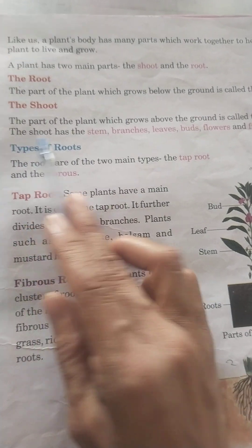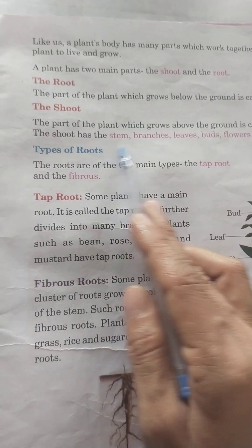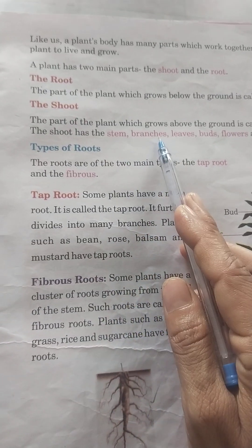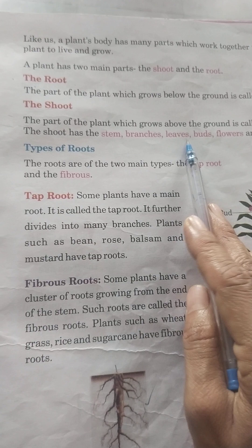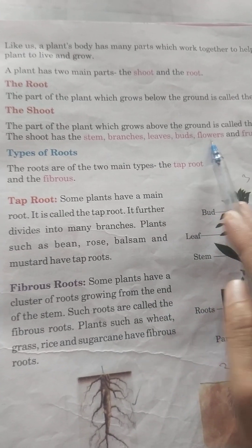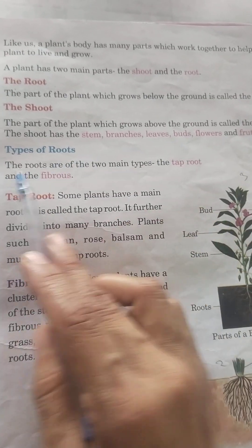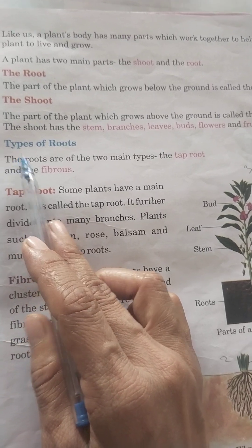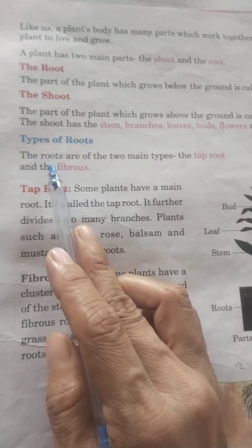The shoot has the stem, branches, leaves, buds, flowers and fruits. Types of roots.